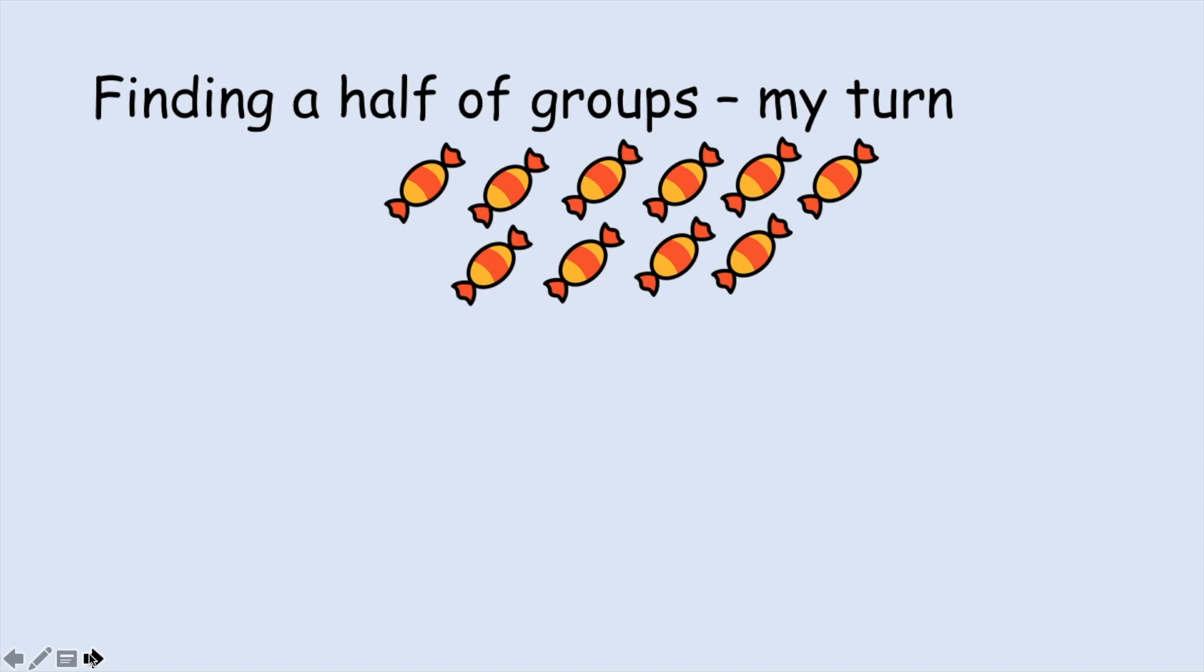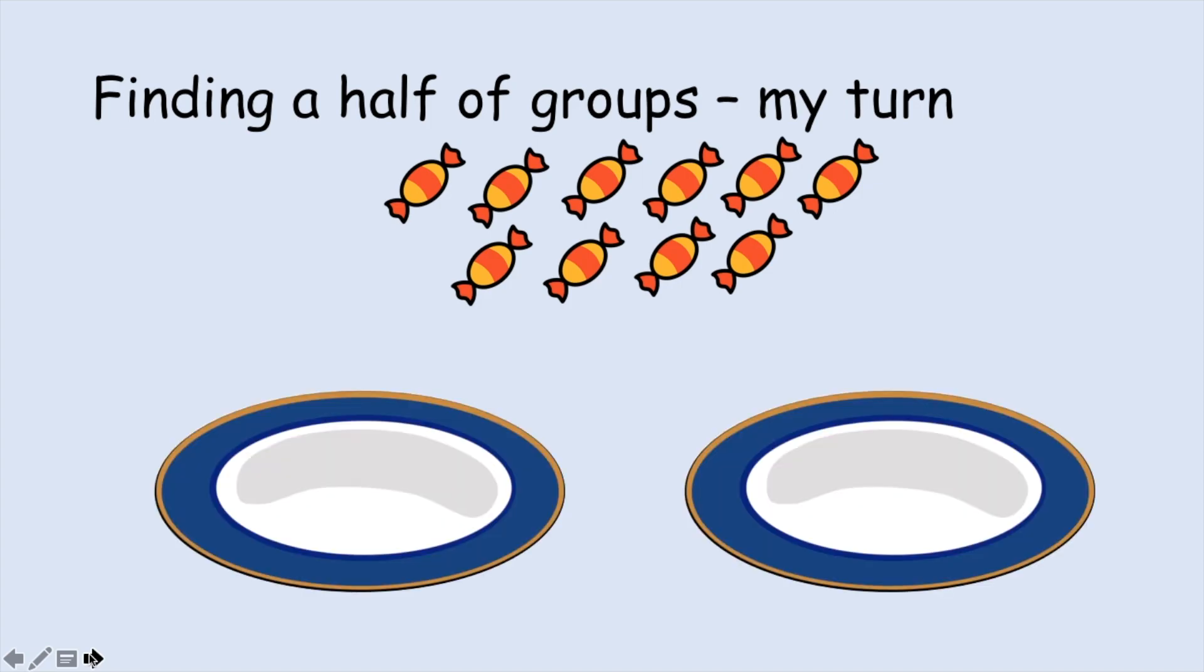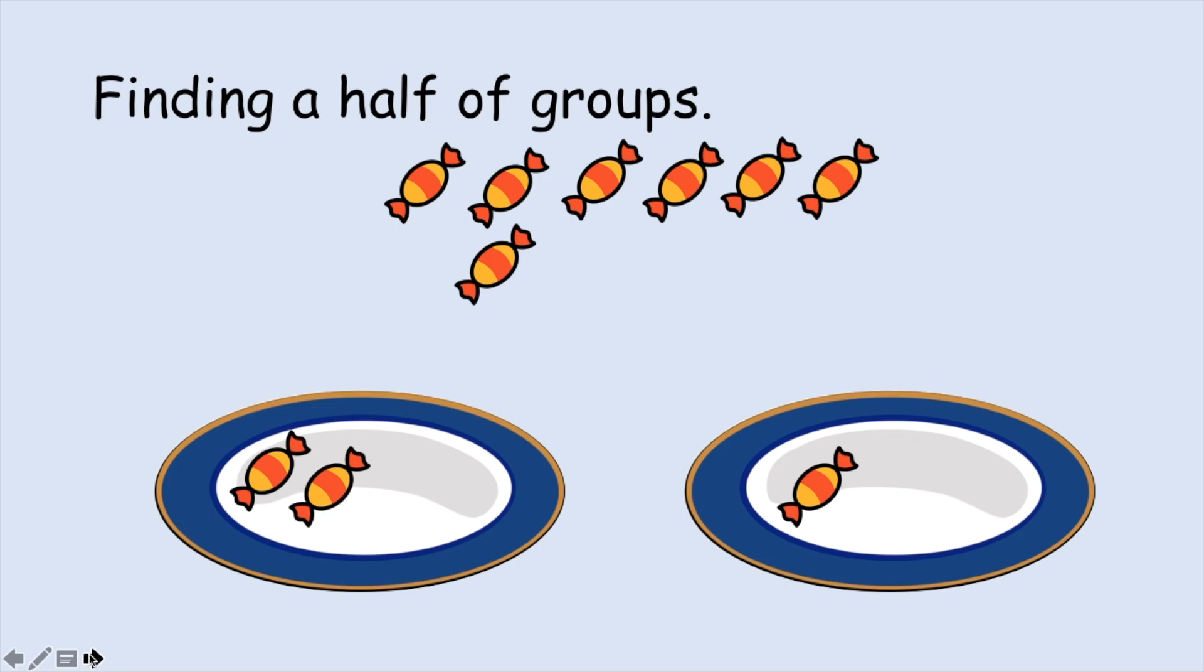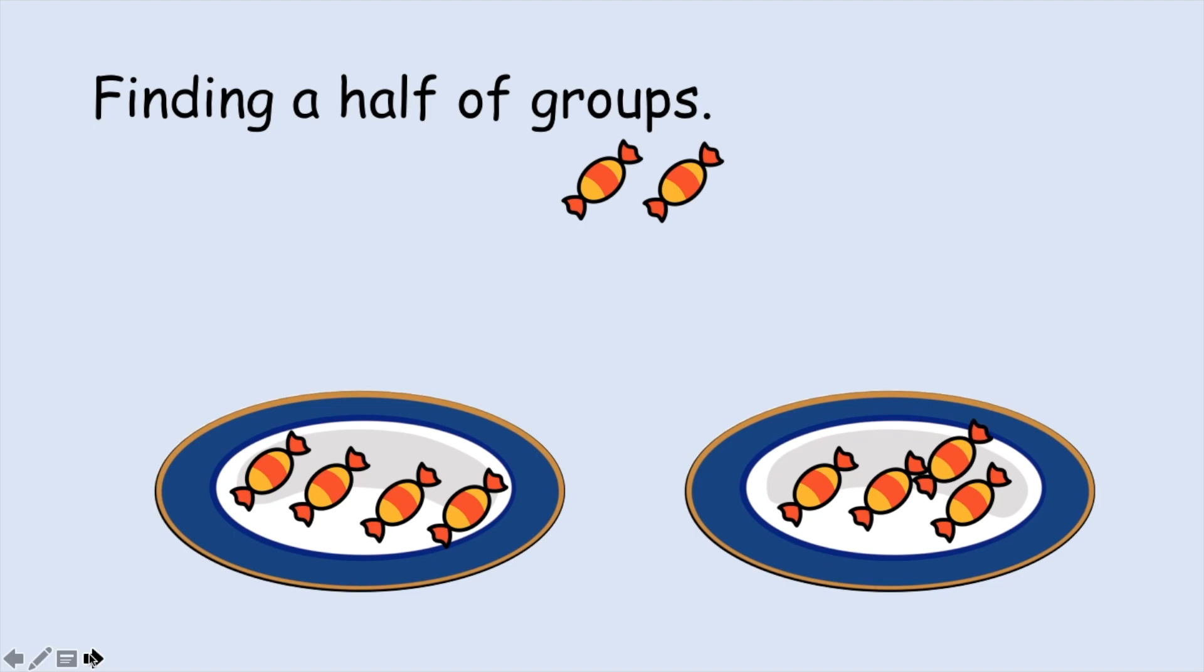So if I'm trying to put it into half, how many parts do I need? Two. Now I am going to slowly start sharing my sweets between two plates to make two equal groups. One, one, two, two, three, three, four, four, five, five.